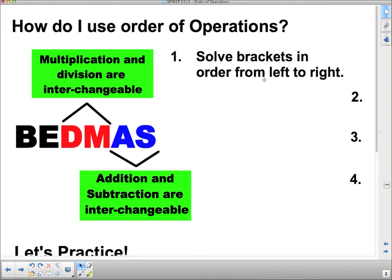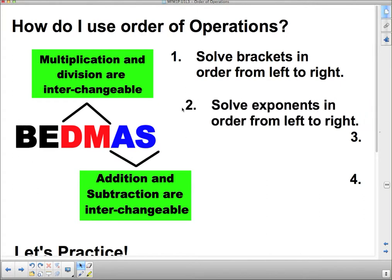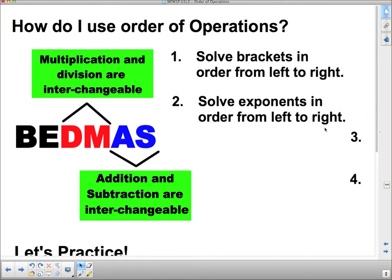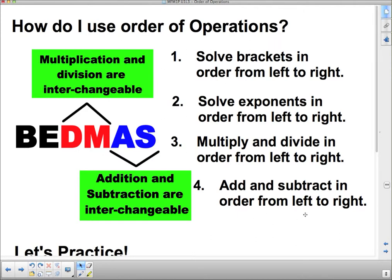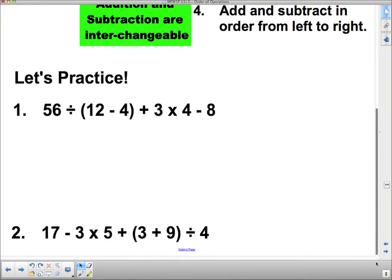So let's pull these out. Solve brackets in order from left to right. This is what it says. Second point, solve exponents in order from left to right. Multiply and divide in order from left to right, although it's not as bad with multiplying and dividing. And the same thing, add and subtract in order from left to right, although it's not definite that you have to do that with adding and subtracting, and that's why they're lumped together. So let's practice, shall we?